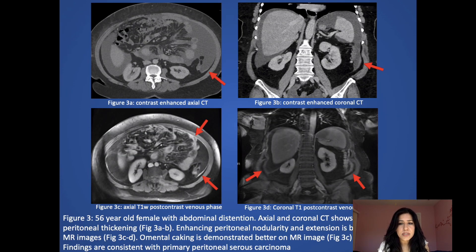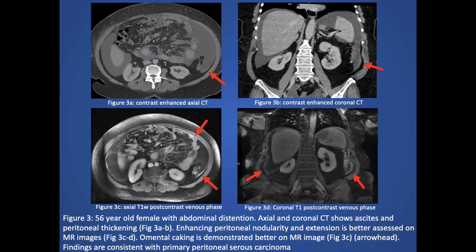Here is a 56-year-old female with abdominal distension. On the top row, the CT findings show ascites and peritoneal thickening. These findings are better assessed on the bottom row MR images, where you can see enhancing peritoneal nodularity and the extension of the disease with omental caking. These findings are consistent with primary peritoneal serous carcinoma.